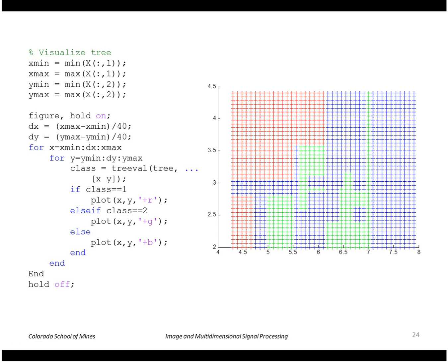This is how the space is divided up where we have the x dimension here, y dimension here. Each point is now assigned red, green, or blue depending on what the tree says it should be. You can see class one was more or less up in the upper left hand corner, and class two and three were kind of intermixed down here.